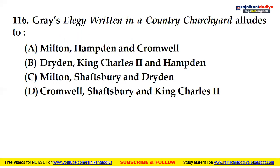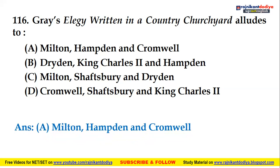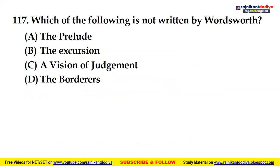Gray's 'Elegy Written in a Country Churchyard' alludes to which literary figures? The options are: Milton, Hampton, and Cromwell; Dryden, King Charles II, and Hampton; Milton, Shaftesbury, and Dryden; or Cromwell, Shaftesbury, and King Charles II. The right answer is A — Milton, Hampton, and Cromwell — the three figures to whom this work by Thomas Gray alludes.